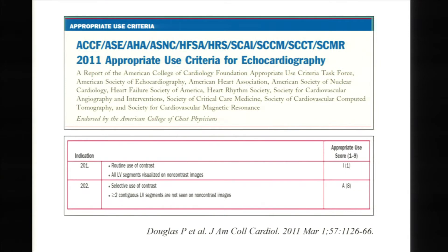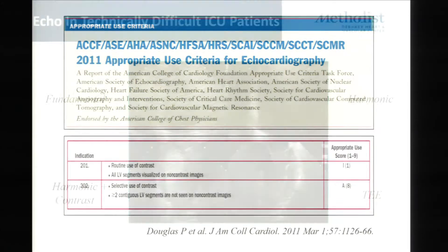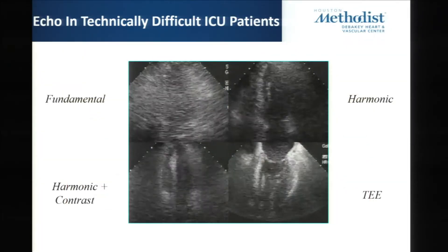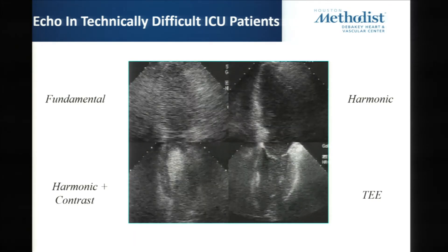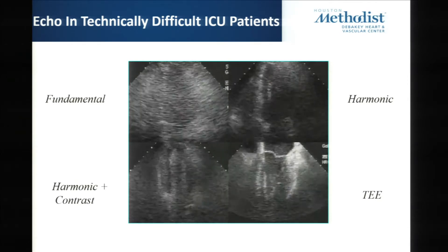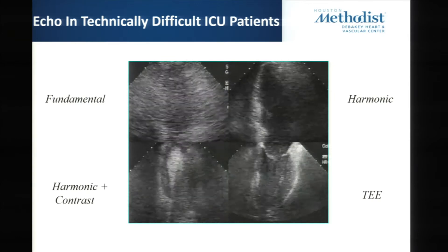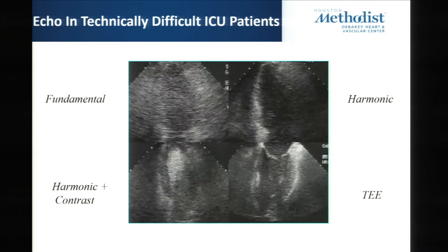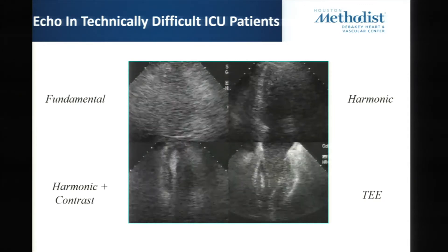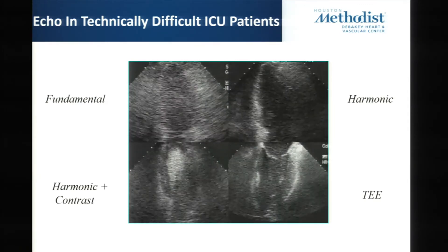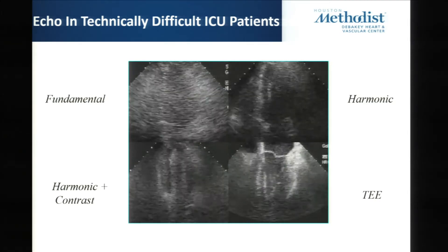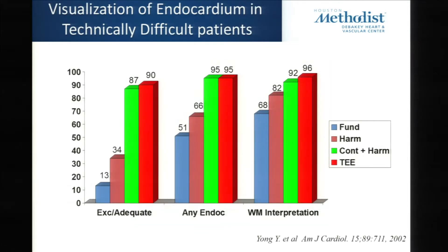The appropriate use is when I can't see more than two segments or more. I'm going to share two studies — historical things — just to tell you about the power. These are ICU patients. On fundamental imaging you can barely see the heart. You add a little harmonic, you can see a little better. You can add harmonic and contrast because it enhances the contrast. This was done here at this institution. These patients were indicated for transesophageal echocardiography. The data showed that if you use contrast and harmonic, it's almost the same as overall evaluation of ventricular function compared to transesophageal echocardiography.